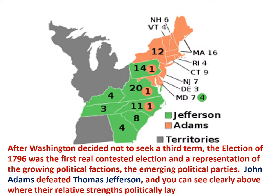In this video, we'll look at the one-term presidency of the second president of the United States, John Adams. Washington decided not to seek a third term, and thus Adams was free to run for the presidency. He ran against Thomas Jefferson in the election of 1796. This was the first real contested presidential election, and it represented the growing political factions — the emerging political parties.